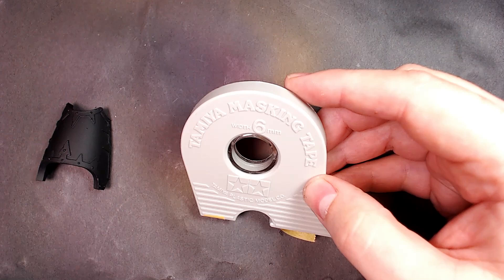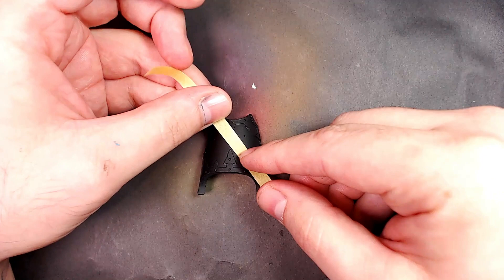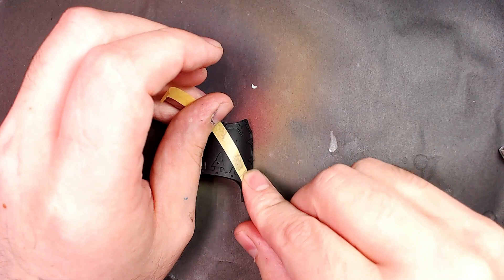Alright, we're grabbing this panel we left off in the build. Tamiya masking tape, using that six millimeter, that small tape. We just start lining it up, a little trial and error here, trying to get those chevrons lined up.